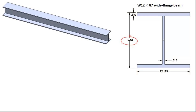12 means this dimension here is nominally about 12 inches tall, and the third variable is 87, and that stands for pounds per foot. So this would give you the weight of the beam, so each foot of the beam weighs 87 pounds.